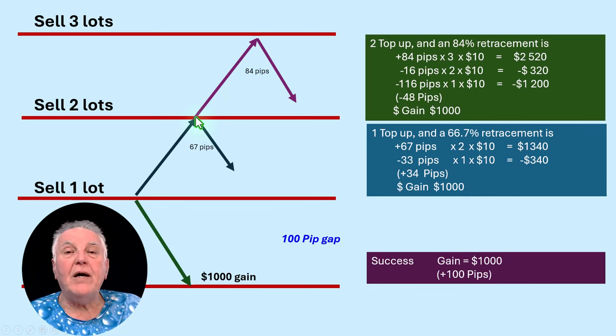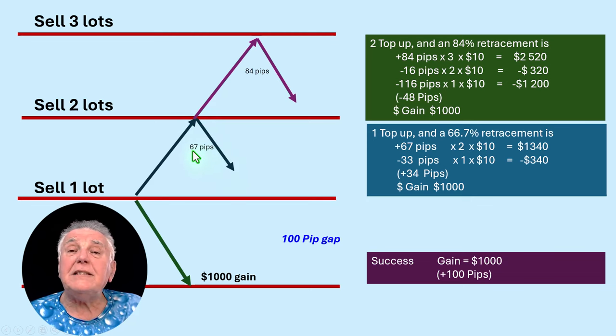So up there you now have two sells: one at two lots and one at one lot. And then again, for argument's sake, let's say that the price goes down 67 pips. Now that's a specific number that I've chosen to illustrate my point.